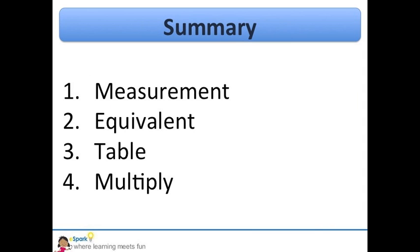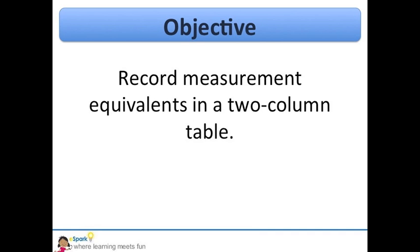We have worked on a few examples of finding equivalent measurements. Here are the four main things you need to remember. Know what measurement you are finding the equivalent of. Find out the equivalent. Make your table and multiply. Now you have some practice finding equivalent measurements. As long as you know or can find the equivalent and can multiply, you can find the equivalent of any measurement.